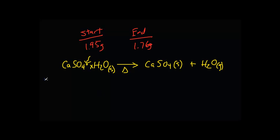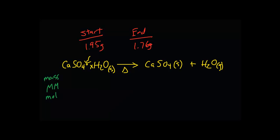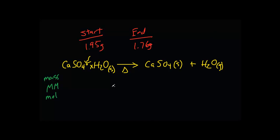To really see what's going on, the best thing you can do is create a mass, molar mass, mole table. We can fill it in step by step. We know the mass of the calcium sulfate hydrate is 1.95 grams and the anhydrous salt, which is what's left behind after we remove the water with heat, is 1.76 grams. So we can just subtract these two and infer that the amount of water that evaporated is 0.19 grams.